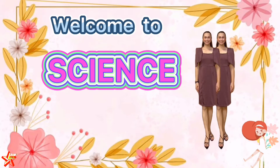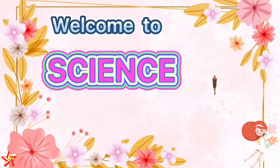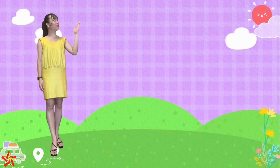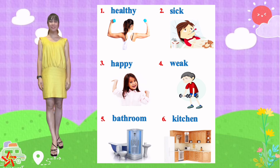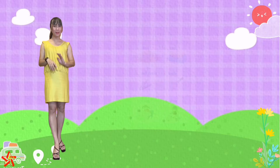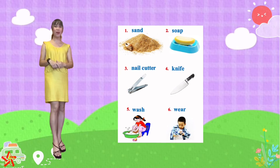Welcome to our science class. These are the vocabulary words that we learned last time. We have healthy, sick, happy, weak, bathroom, and kitchen. In today's lesson, we are going to continue personal hygiene. And I have here six vocabulary words once again. Let's check out all these pictures — number 1, 2, 3, 4, 5, and 6. Do you know all their English names?